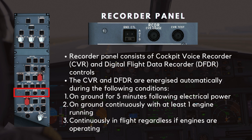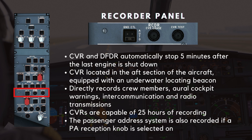The voice recorder panel consists of cockpit voice recorder (CVR) and digital flight data recorder (DFDR) controls. The CVR and DFDR are energized automatically during the following conditions: on the ground for five minutes following electrical power; on the ground continuously with at least one engine running; and continuously in flight regardless of whether engines are operating. The CVR and DFDR both automatically stop five minutes after the last engine is shut down.